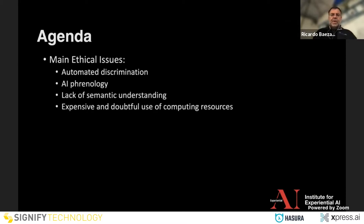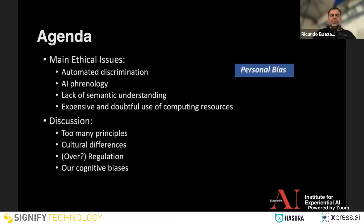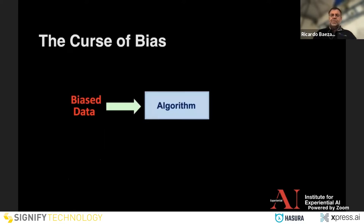I will start with the main ethical issues — and I have a personal bias here. These are the four main ones: discrimination, phrenology, lack of semantic understanding, and excessive use of resources. Then I want to discuss a few related things and at the end some recommendations.